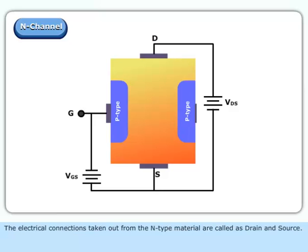The electrical connections taken out from the N-type material are called the drain and source.